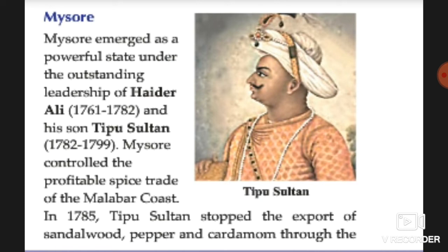In 1785, Tipu had sandalwood, pepper and cardamom traded in his own ports, and restricted local merchants from trading with the company. Tipu also entered into a close relationship with the French and modernized his army under their assistance. The company perceived this as a threat to their economic interests.